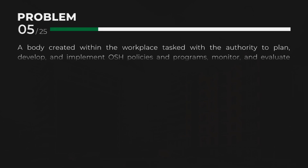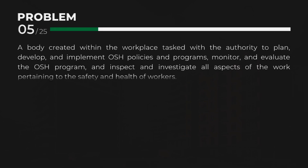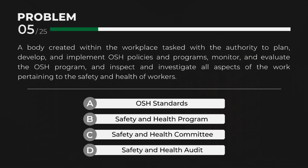C. Safety and Health Committee — A body created within the workplace, tasked with the authority to plan, develop, and implement OSH policies and programs, monitor and evaluate the OSH program, and inspect and investigate all aspects of work pertaining to the safety and health of workers.